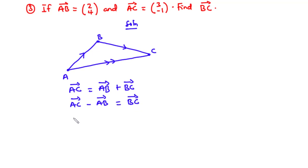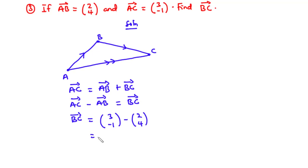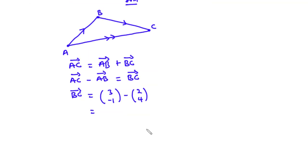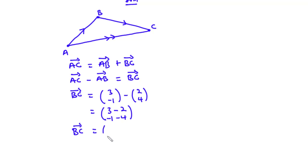So vector BC equals vector AC minus vector AB, which is (3, -1) minus (2, 4). Treating this as a single vector: (3 minus 2) for the x-component gives 1, and (-1 minus 4) for the y-component gives -5. Therefore, vector BC is (1, -5).